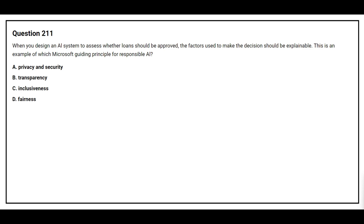Question number 211. When you design an AI system to assess whether a loan should be approved, the factors used to make the decision should be explainable. This is an example of which Microsoft guiding principle for responsible AI? Option A: Privacy and Security. Option B: Transparency. Option C: Inclusiveness. Option D: Fairness. The correct answer is Option B, Transparency.